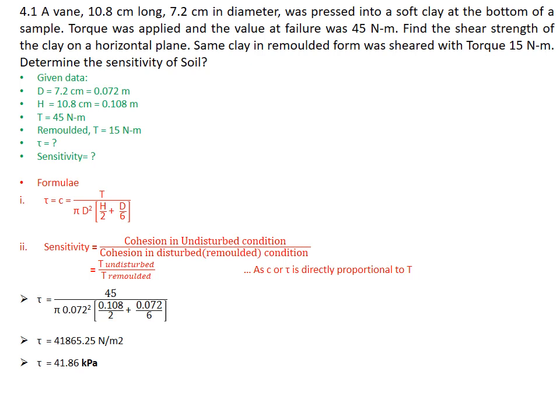So as we discussed, sensitivity can be directly found out by the ratio of torque undisturbed to torque remolded, so 45 by 15 will get 3. So with this we finish the first video. In the coming videos we will solve problems based on direct shear test, triaxial test, and unconfined compression test.